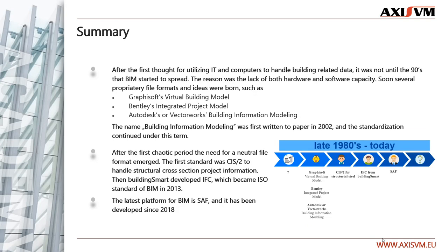The history of BIM goes back to pretty early years. It always seemed wise to hold all building-related information at one place, which could serve every participant, but it was not until the 90s that we had the required IT background and computational capacity to handle the vast amount of data. Then several proprietary file formats and ideas were born, such as Graphisoft's Virtual Building Model, Bentley's Integrated Project Model, or Autodesk's or Vectorworks Building Information Modeling. The name Building Information Modeling was first written to paper in 2002, and the standardization continued under this term.